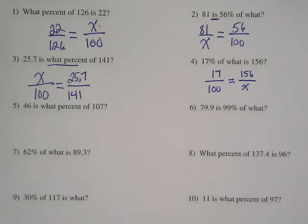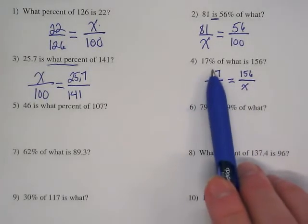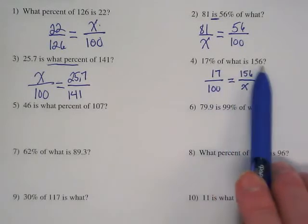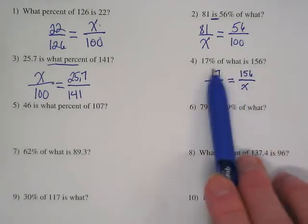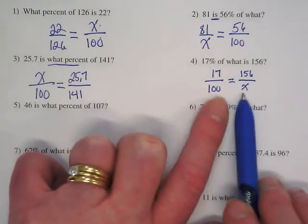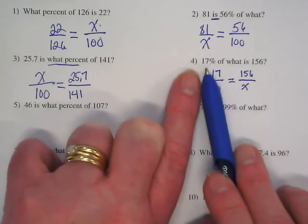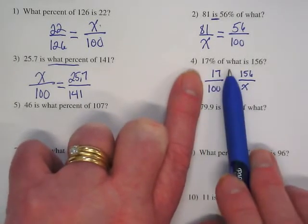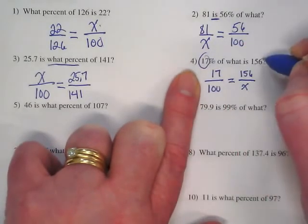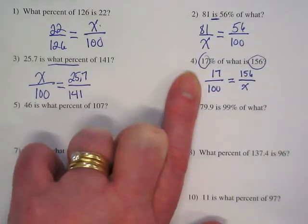Let's talk about why it looks the way it is. This is 17% of what is 156. Whenever we're talking about a percent, the of what, that's the hundred. That's the whole. They're saying 17% of something is 156. That means the 17 goes with this. It's saying that that's the part.